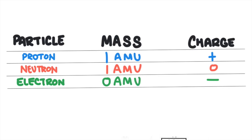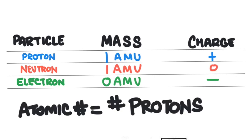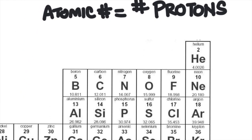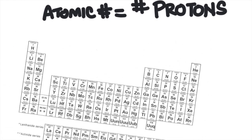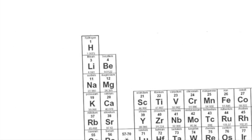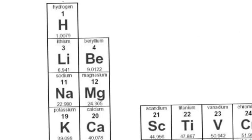The number of protons is what makes each atom unique. On the periodic table, the number of protons in the nucleus of an atom is given by the atomic number. We can use the atomic number to identify the element. For example, an atom with an atomic number of 4 would be beryllium. The atomic number is usually located above the symbol of the element.